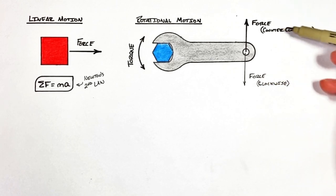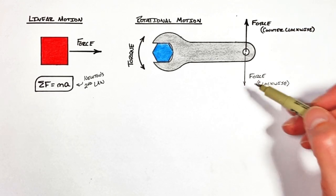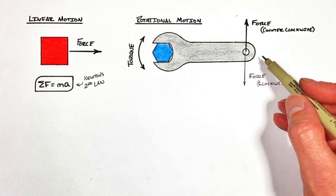And so the first thing we can conclude is that the direction of force matters when trying to produce torque on a wrench.